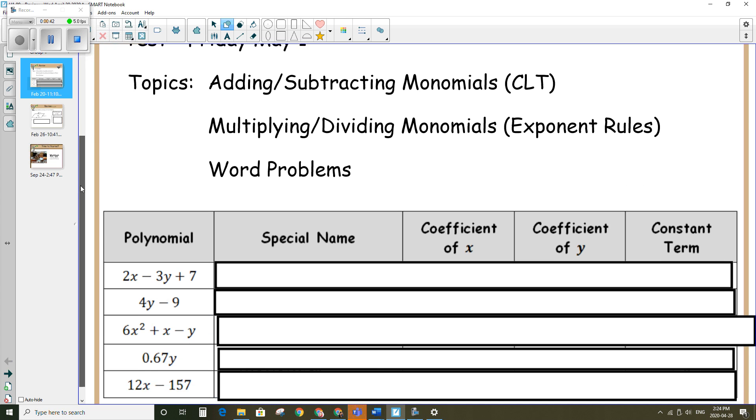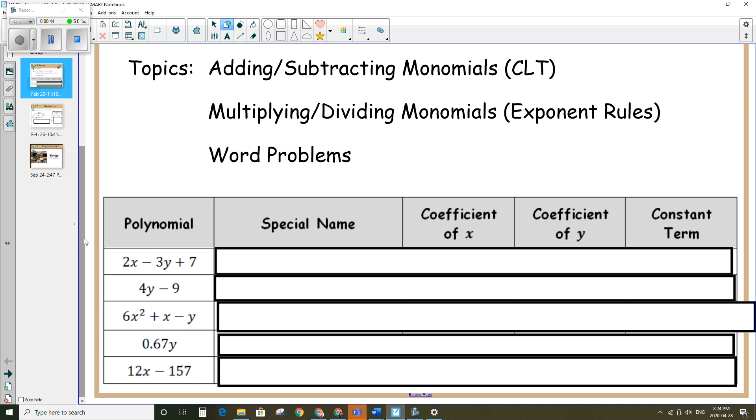Alright, so page 18, there are some definitions to start with first. The special name that's given to each polynomial depends on how many terms there are in that polynomial, and each term is separated by a plus or a minus.